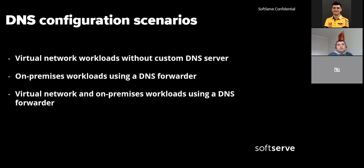There are three main approaches to configuring DNS for Azure private endpoints. First, virtual network workloads without a custom DNS server — use only a private DNS zone attached to the vNet. Second, on-premises workloads using a DNS forwarder — use a special VM or Azure Firewall as a DNS forwarder to resolve private endpoint DNS names. Third, virtual network and on-premises workloads using a DNS forwarder — DNS forwarders resolve private endpoint DNS names for both Azure and on-premises environments. We'll review these in more detail.